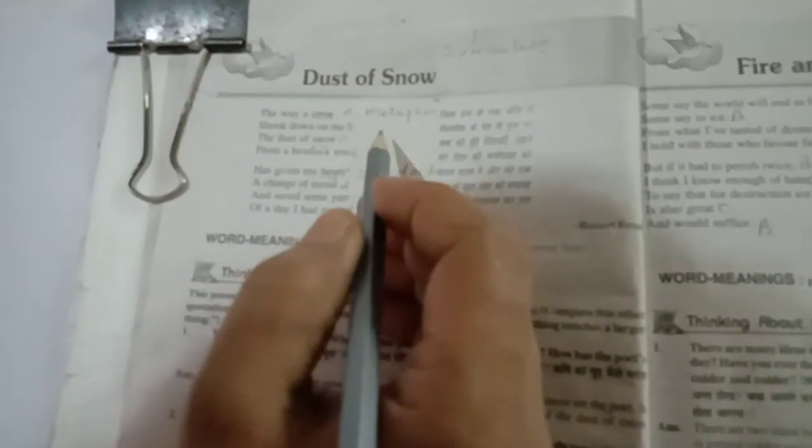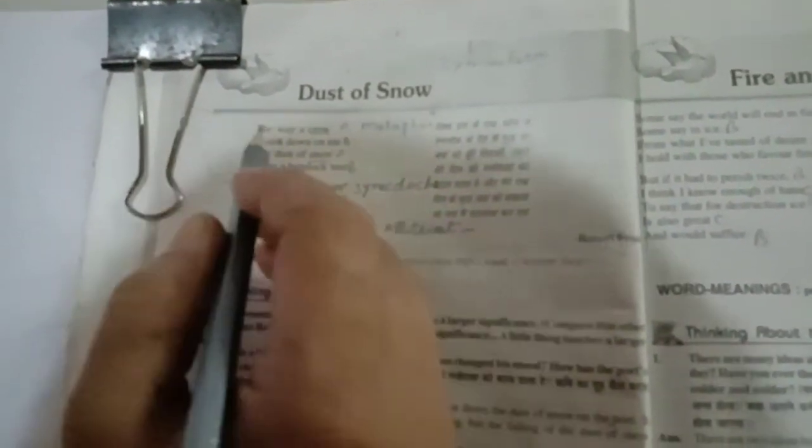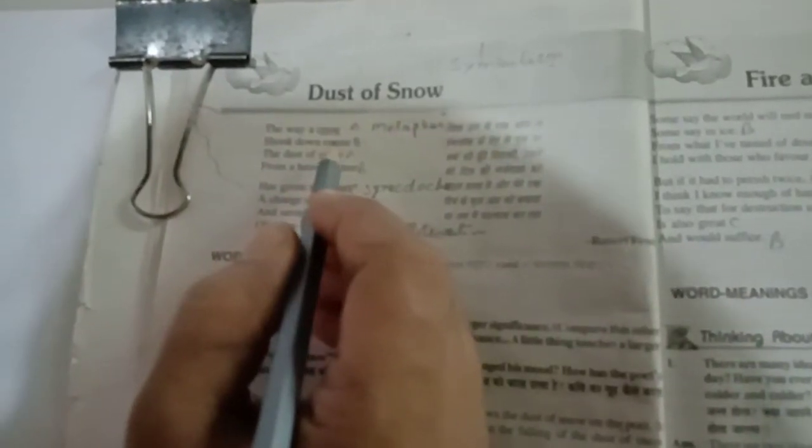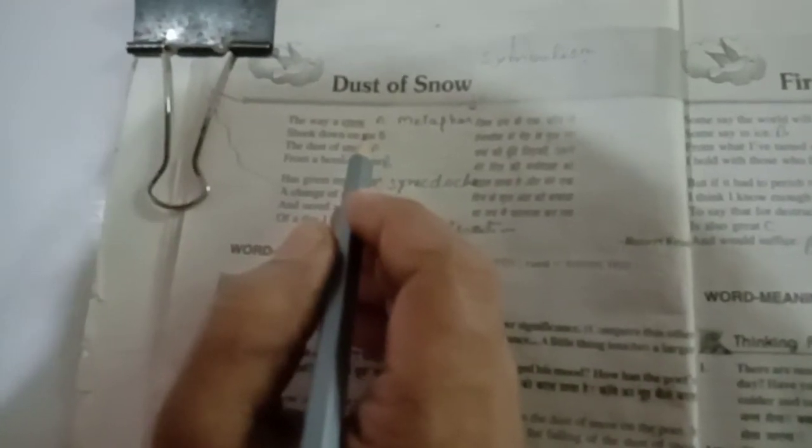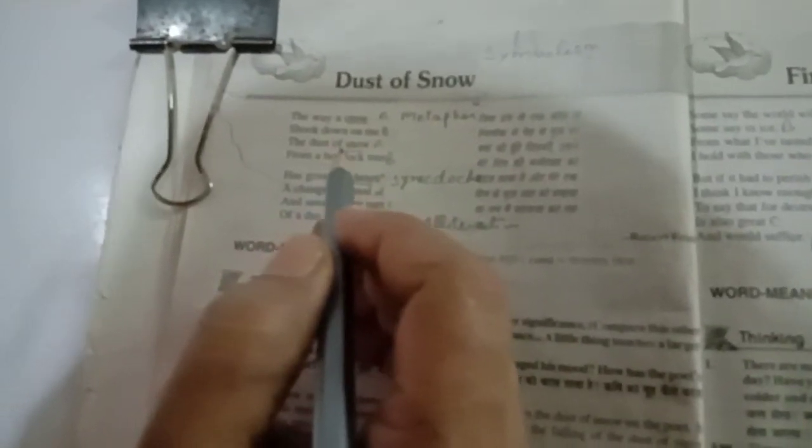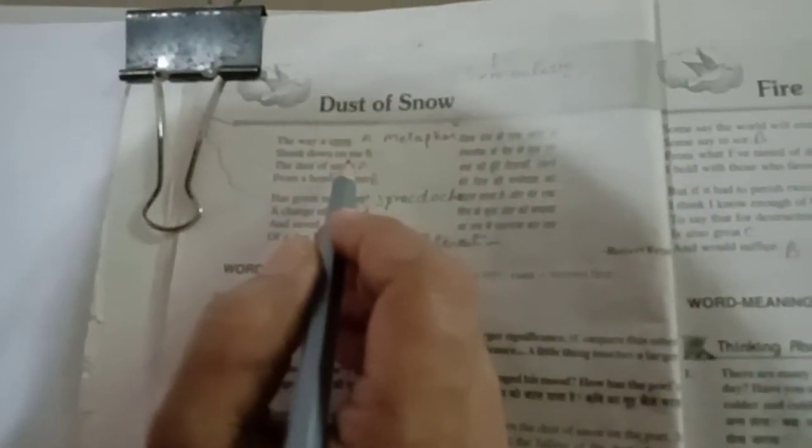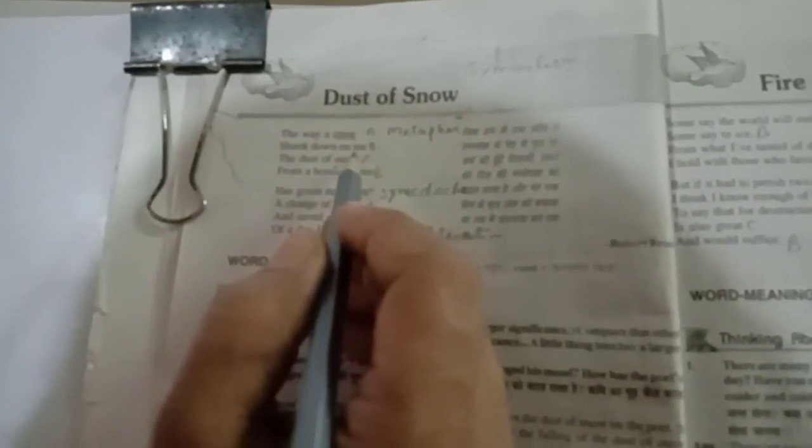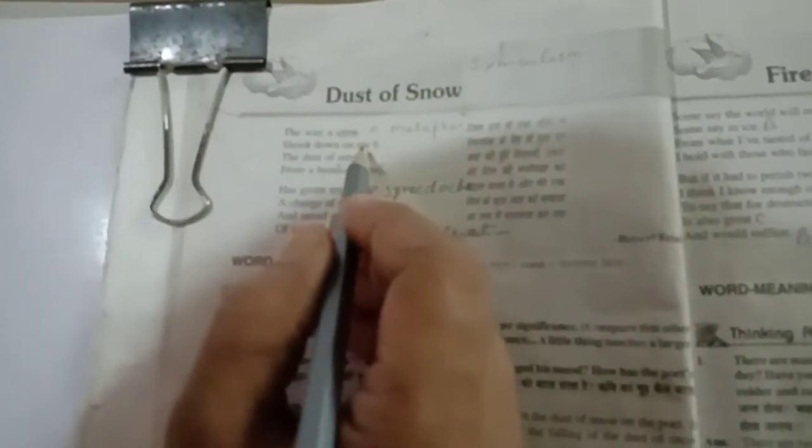Now I am going to explain this poem line-wise. The way a crow shook down on me the dust of snow from a hemlock tree. The poet who was sitting under a hemlock tree, a crow who was sitting on the tree shook its branch, hemlock tree's branch.